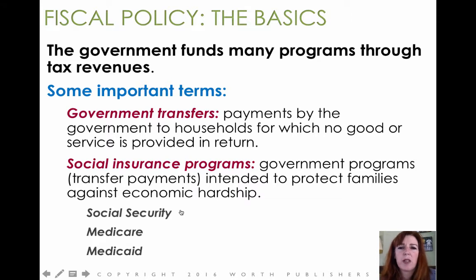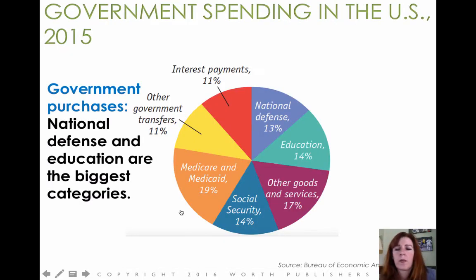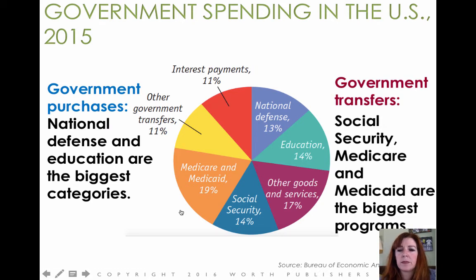Some of the biggest government funding policies are government transfers and social insurance programs. The biggest sources of U.S. tax revenue are personal income taxes, the largest at 45%, and social insurance taxes like social security contributions. In terms of spending, the biggest chunks are Medicare and Medicaid, social security, education, defense, and interest payments on past debt. The difference between purchases and transfers is that purchases involve government spending exchanged for goods and services, while transfers are government spending with no goods or services coming in return.